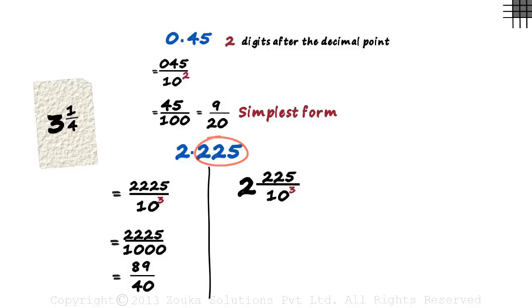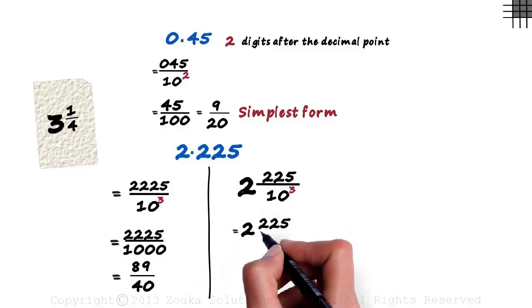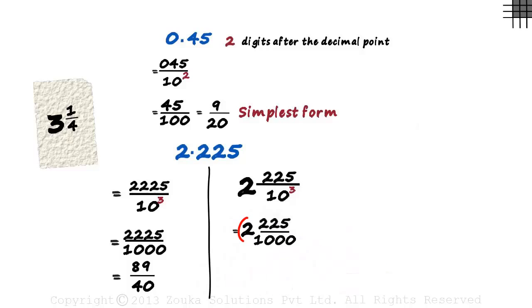Now we just have to simplify the fractional part to its simplest form. This can be written as 2 225 by 1000. This is the whole part and this is the fractional part. This when reduced gives us 9 by 40. So 2.225 can be written as 2 9 by 40. That becomes a mixed fraction form.